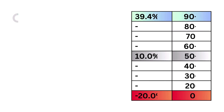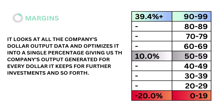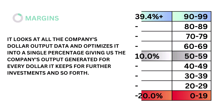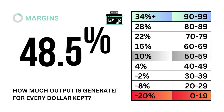Next, margins. Margins looks at all the company's dollar output data and optimizes it into a single percentage, giving us the company's output generated for every dollar it keeps for further investments. The models tell us that a margin rate of 10% is considered average. Here's our margins grade.